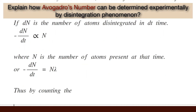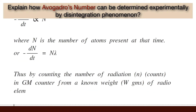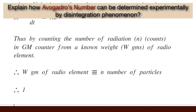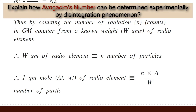By counting the number of radiations N in a GM counter from a known weight w grams of radio element, w grams of radio element is equivalent to N number of particles. Therefore, one gram mole — or the atomic weight of the radio element — will be equivalent to N × A / w number of particles, which is Avogadro's number.